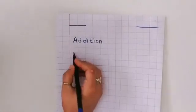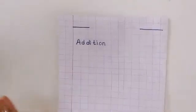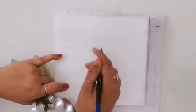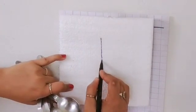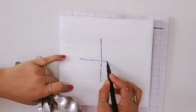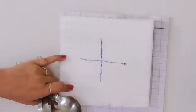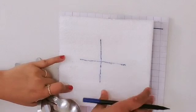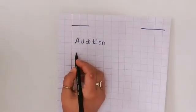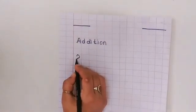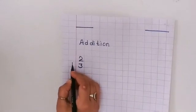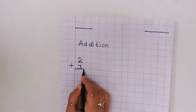The symbol of addition — addition ka symbol kya hota hai? It is a standing line and a sleeping line together. This is the symbol of addition, which we call the plus sign.